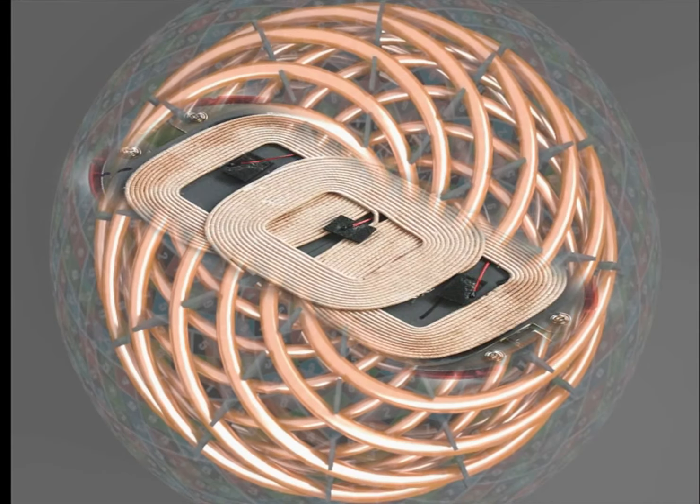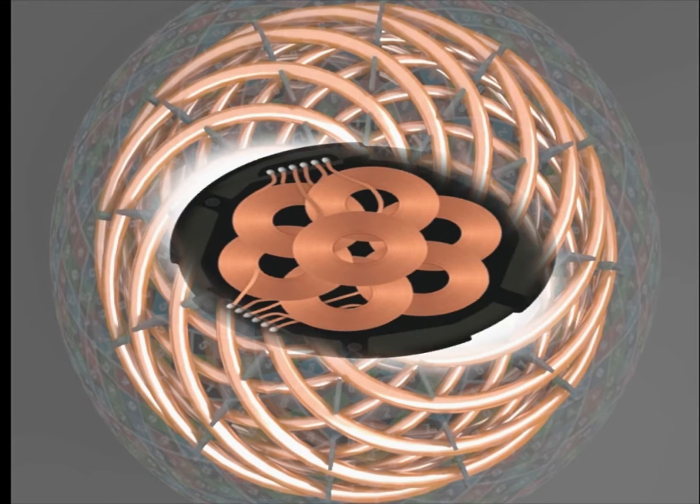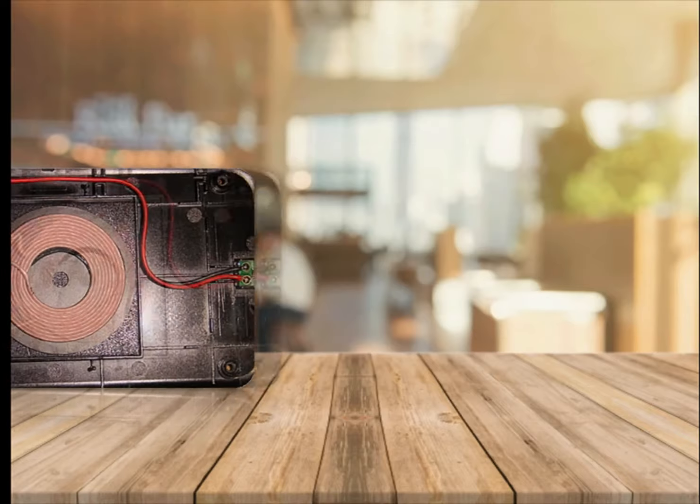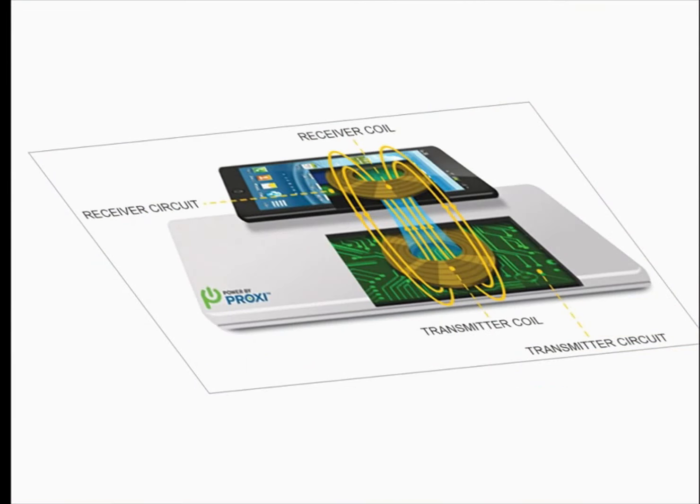The wireless charger can have more than one coil like this or up to seven coils to increase the strength and the coverage area. The coil in the mobile looks like this and as a whole, they function like a transmitter and receiver circuit as shown here.